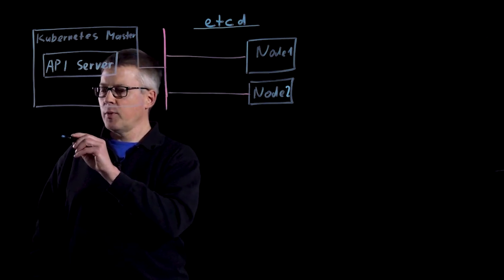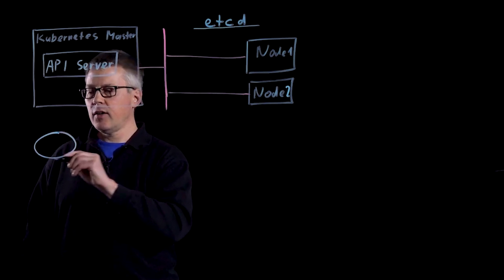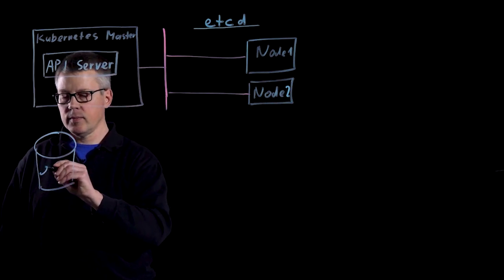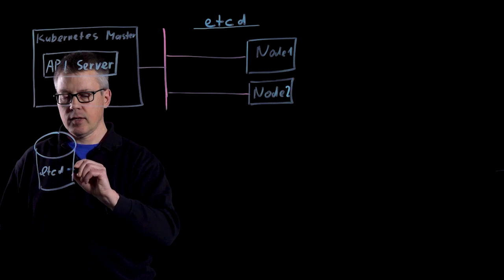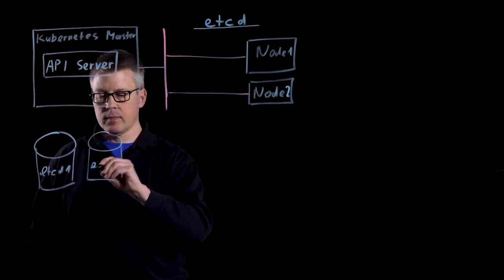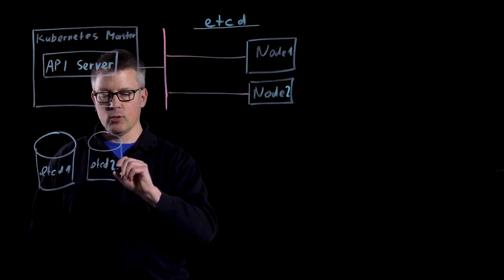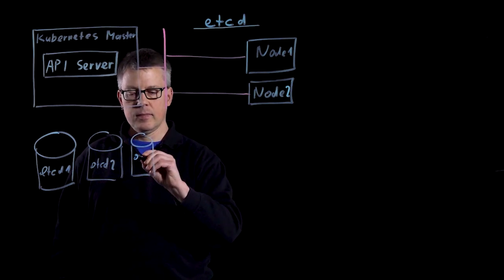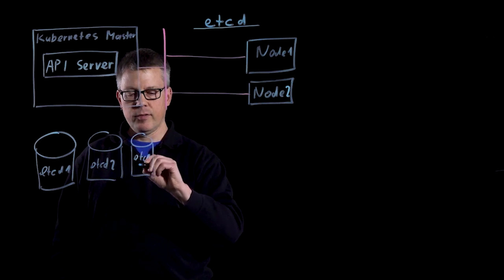In a normal situation, you have a cluster of three etcd nodes: etcd1, etcd2, and etcd3.